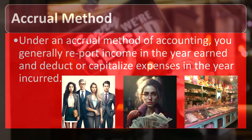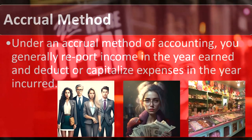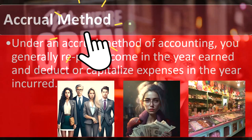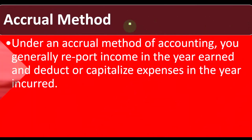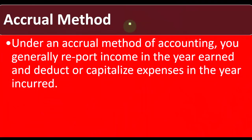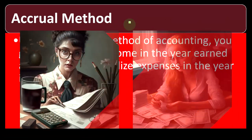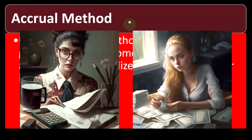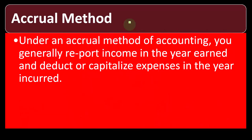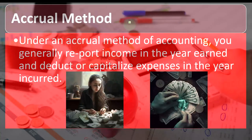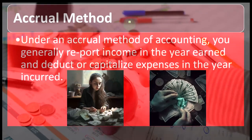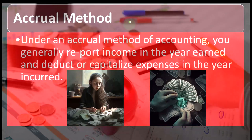Large businesses generally prefer the accrual method because it's more difficult to manipulate your books on an accrual method than a cash method. On a cash method, you could try to manipulate your books by adjusting when you're going to receive and make payments. The IRS has put some limitations on that ability — for instance, if you prepay for something, you have to account for it differently. They'll try to restrict manipulation of income reporting under the cash method.